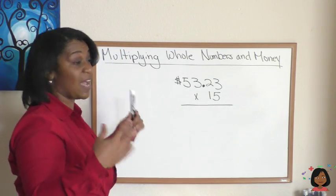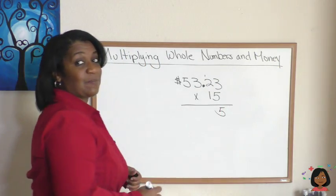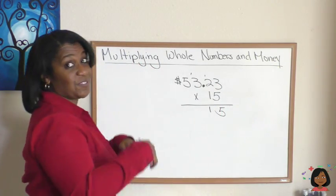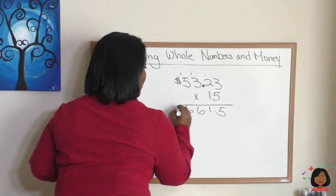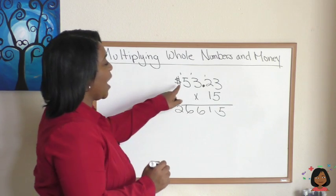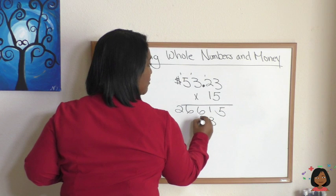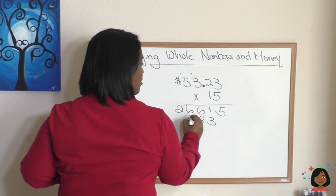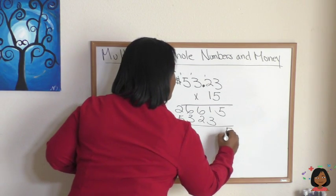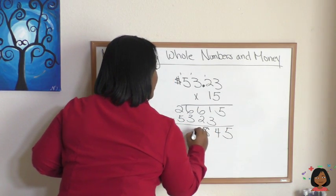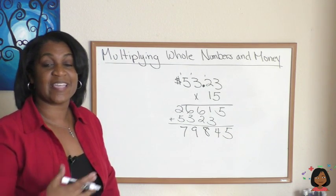We're going to do $53.23 times 5 first. 5 times 3 is 15, 5 times 2 is 10 plus 1 is 11, 5 times 3 is 15 plus 1 is 16, and 5 times 5 is 25 plus 1 is 26. Now we have 53.23 times 1, and we know everything times 1 is just the same number itself, so I'm just going to rewrite that number. Now we add: 5, 4, 8, 9, 7.